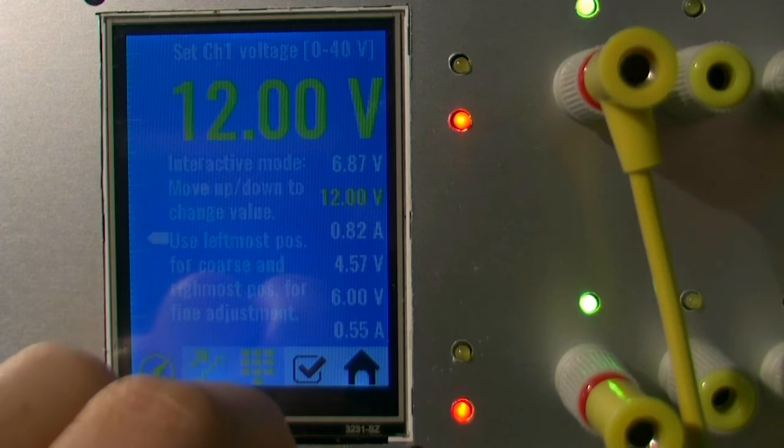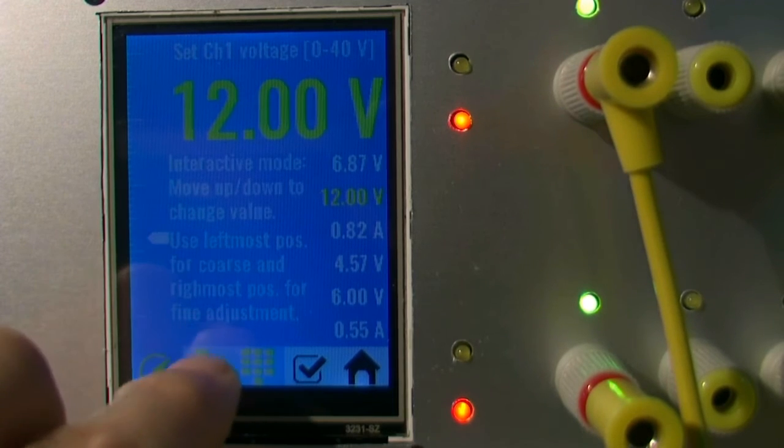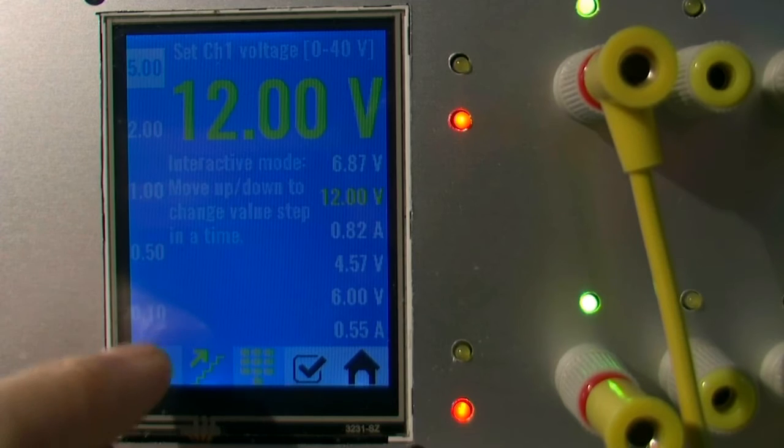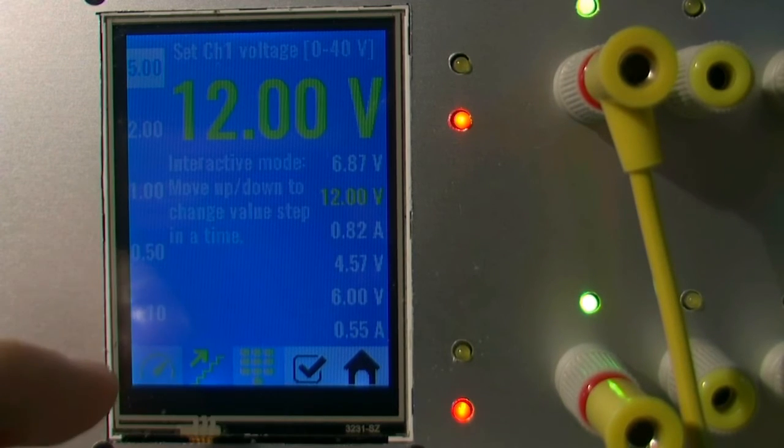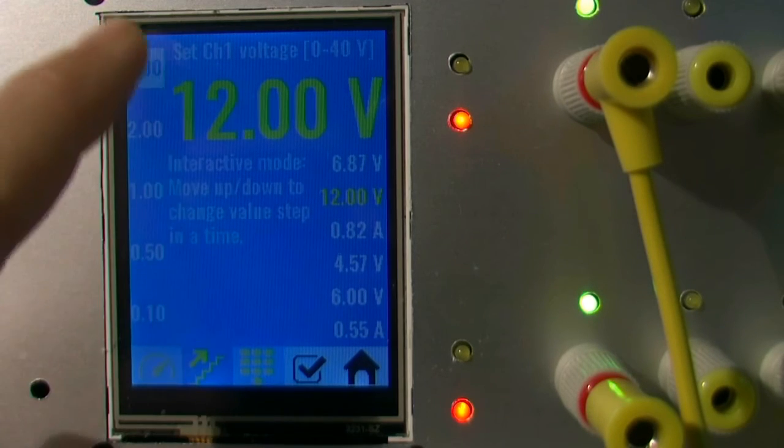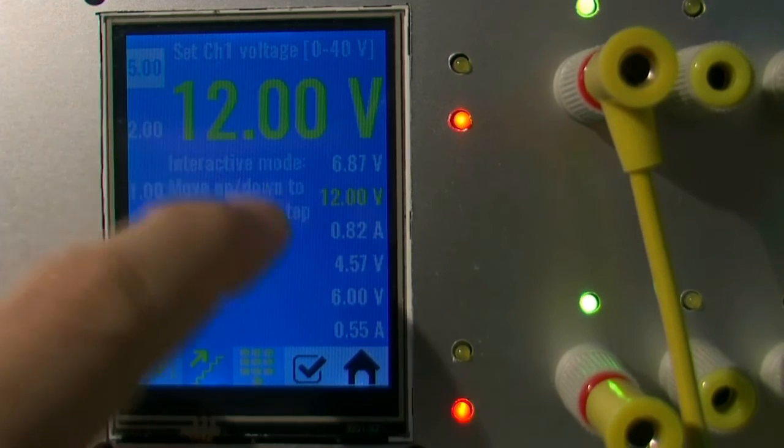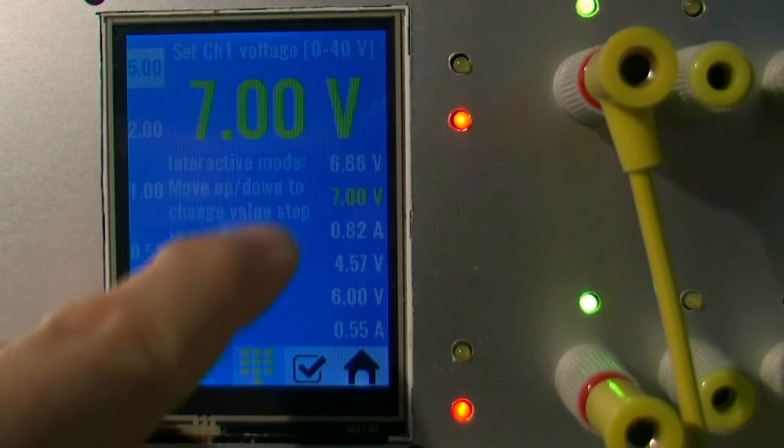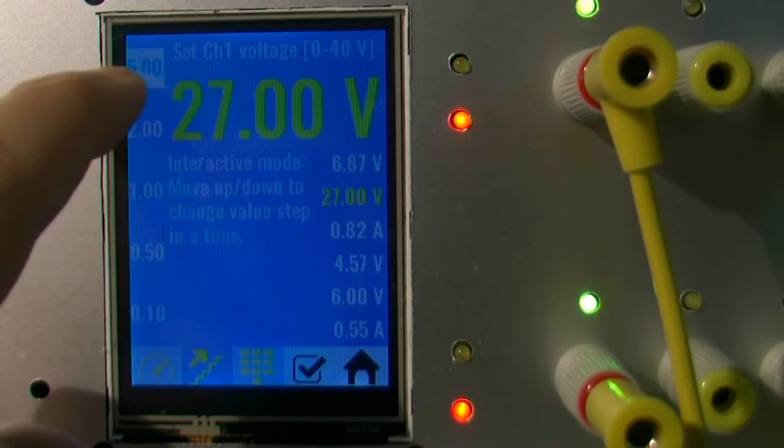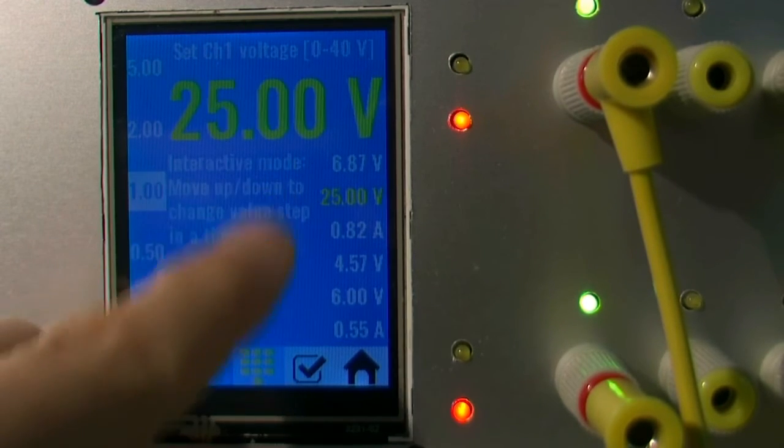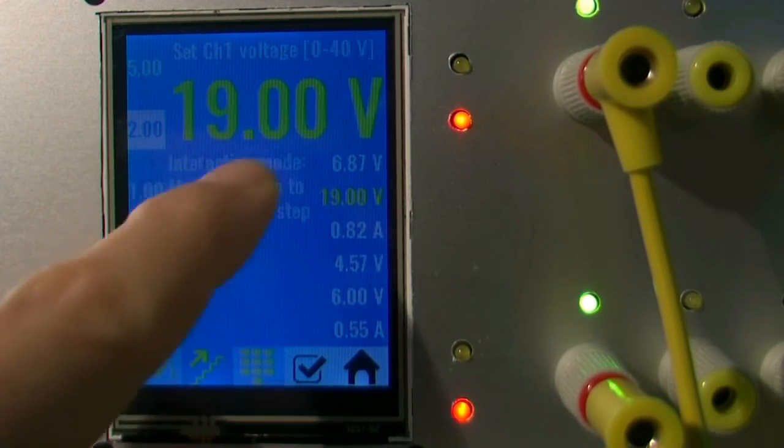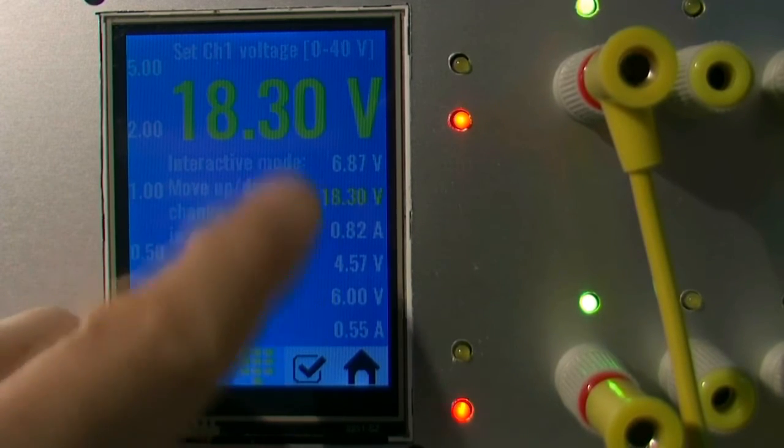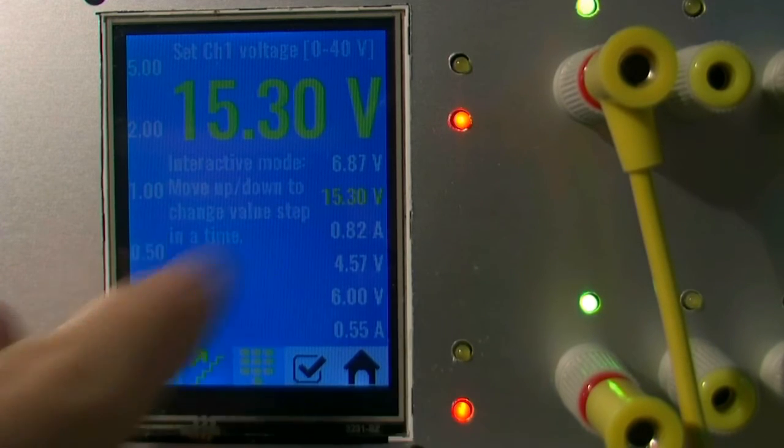Let's continue with another mode of operation, it's a so-called step mode. It's very similar to slider mode or it's just a special case of slider mode where we have five predefined step values and each movement will change output value using that predefined step. Let's say if I want to go with one volt I can go like this, 2 volts I can go like this, or I can go with some smaller step.